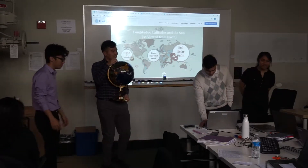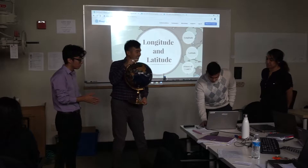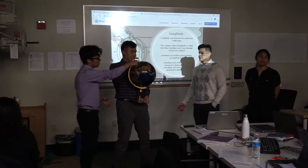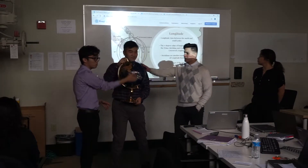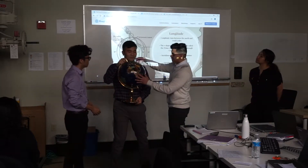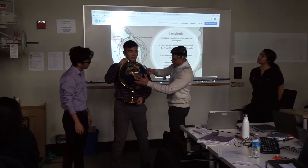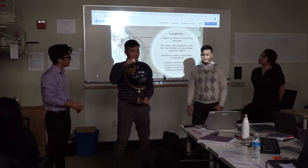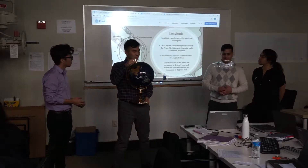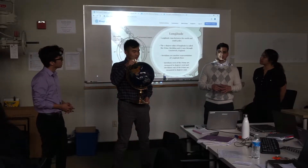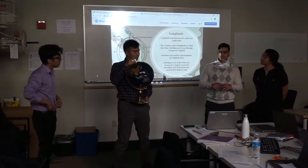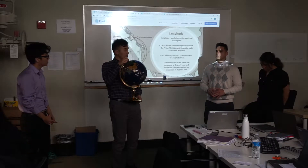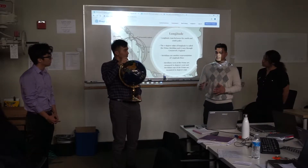Thank you, Ana. So I'm going to talk about longitude first. Longitude runs between the North Pole and South Pole — we have a line going from the North Pole all the way down to the South Pole. Also, the zero degree line is known as the prime meridian, which runs from Greenwich, England.